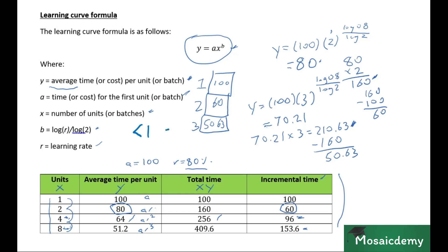Right? So what that means is, given the fact that the learning rate r is always a percentage, it's gonna be less than 1. And that means that b will also always be a negative number.